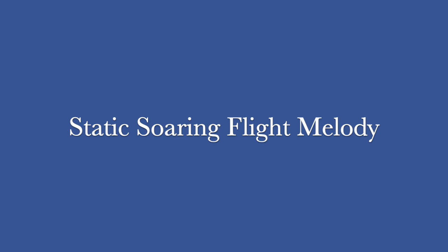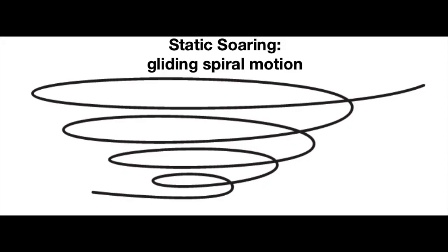While the last flight pattern had many flaps, our next flight pattern has a lot of glides. In static soaring, the bird will glide in circular or spiral shapes, often rising higher in the air. The warm and fast-moving air will help the bird to continue its spiral gliding motion as it ascends in the sky.